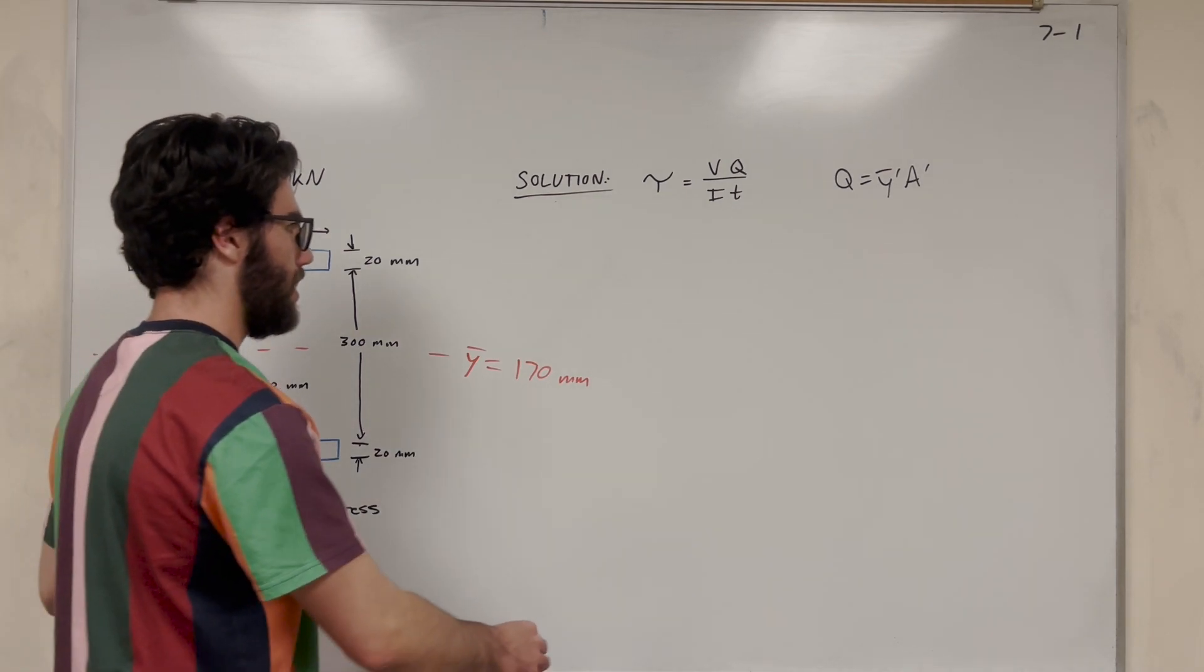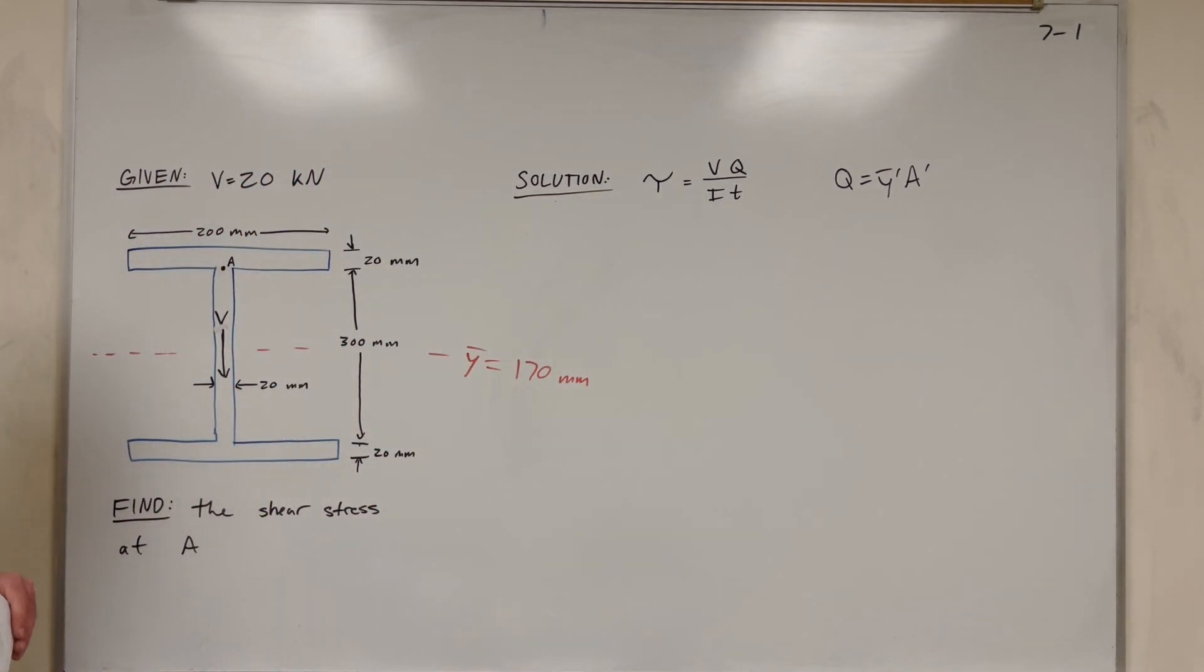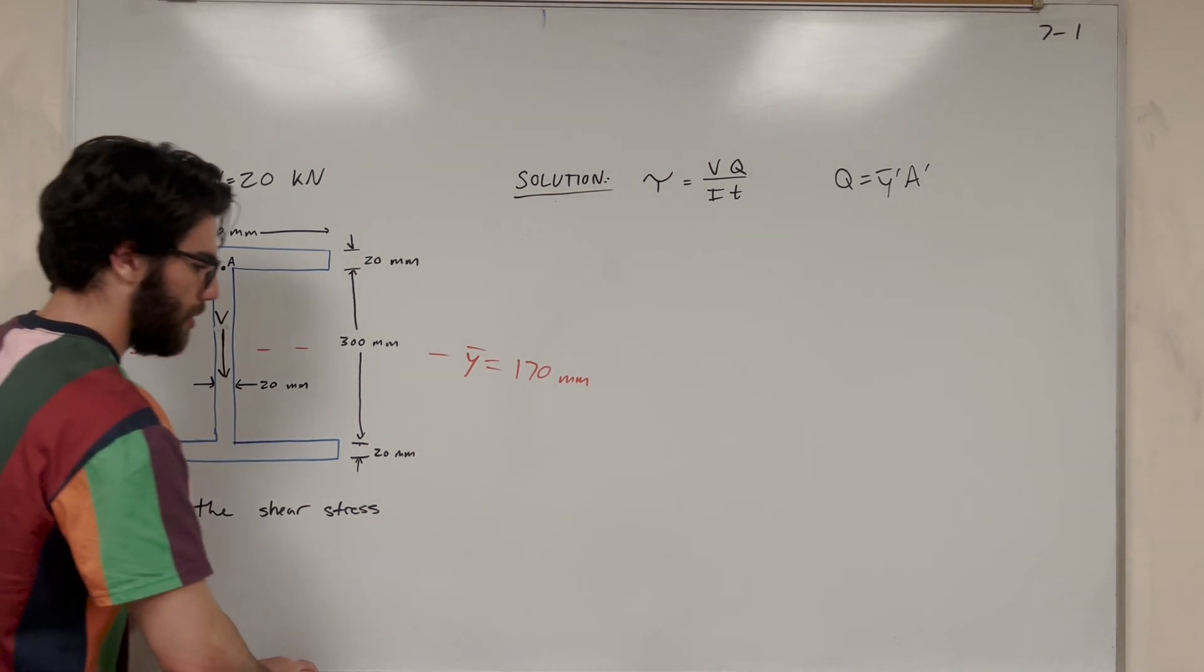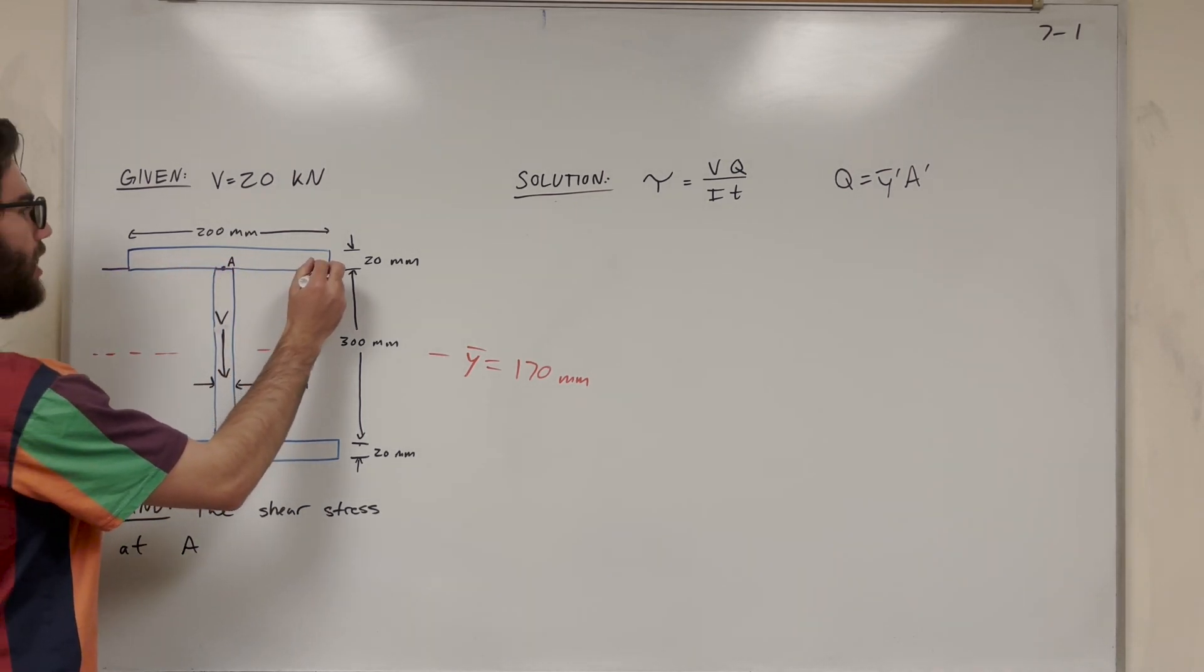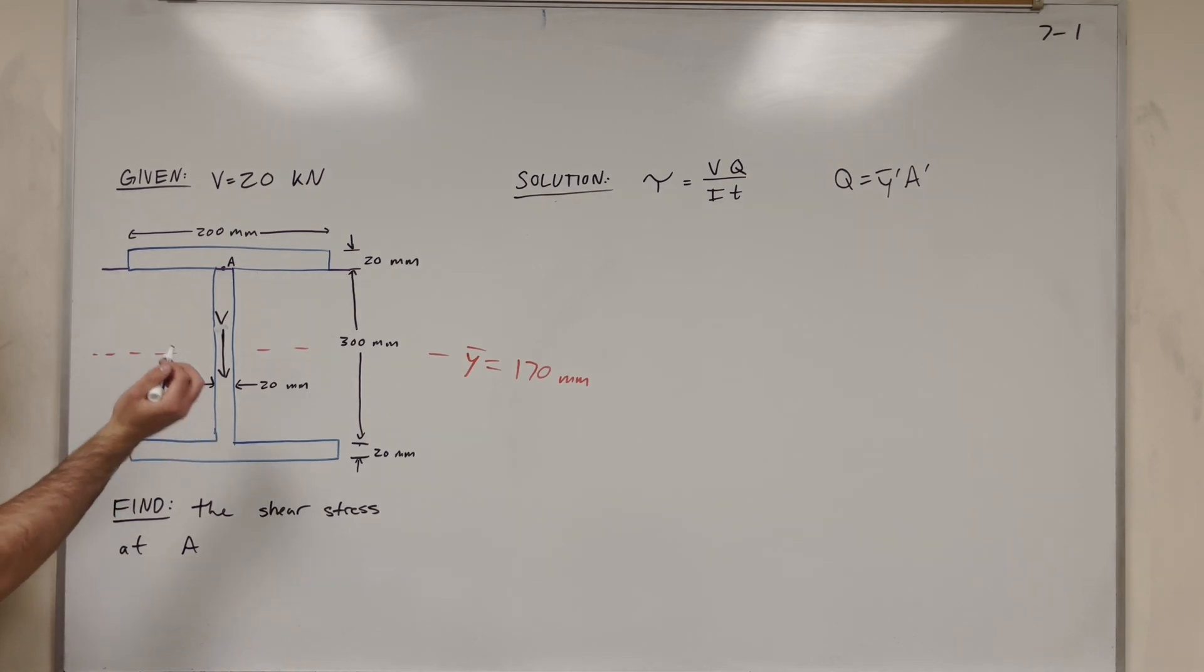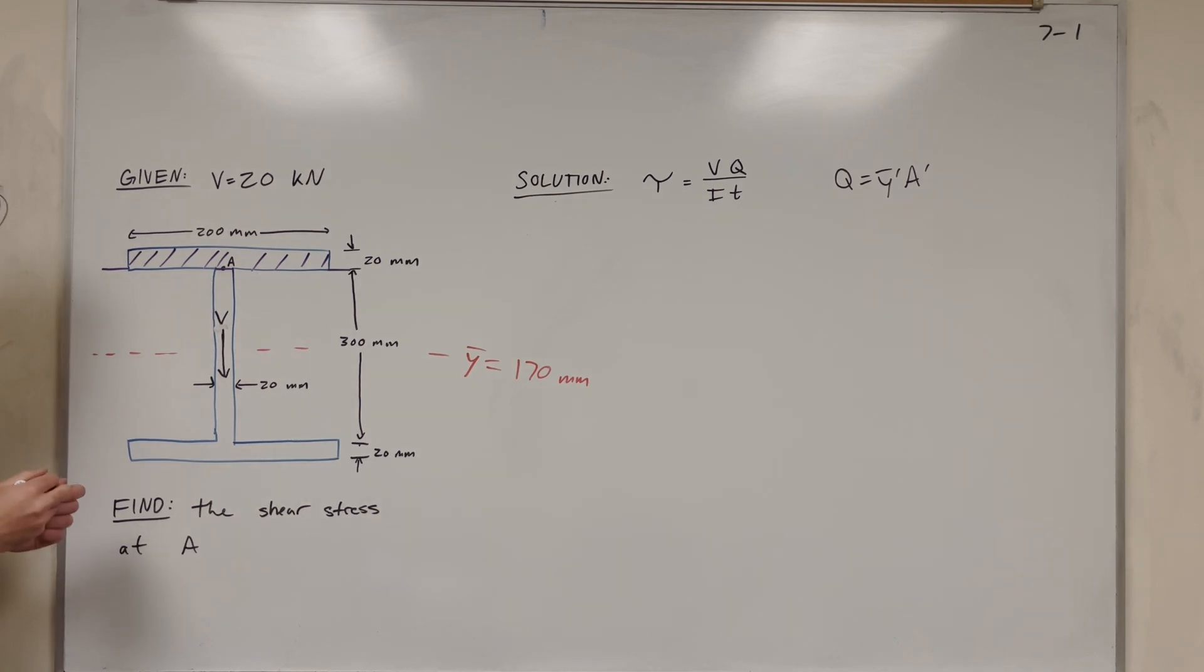So what is Y bar prime? Well, Y bar prime is the distance to the center of mass of the shape that we're taking. So what we're going to do is we're going to find the point of A. We're taking a line here. Y bar prime is going to be the center of mass of everything above here. So we're looking at this shape, and this is the only shape we're interested in now.